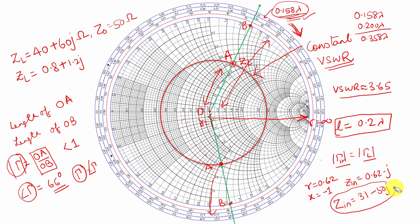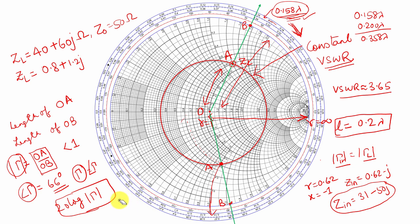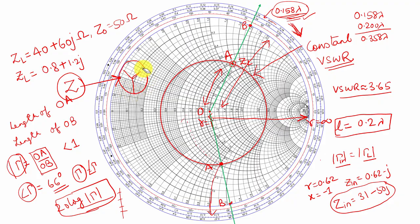To calculate the return loss, you can either take 20 log of gamma, or find it from the scale given on some Smith charts by drawing a straight line and reading the value. I hope using this Smith chart you can find out the basic parameters. In some more videos, I will be explaining about the Smith chart matching circuit and how to convert this Smith chart from impedance form to the admittance chart. Thank you.